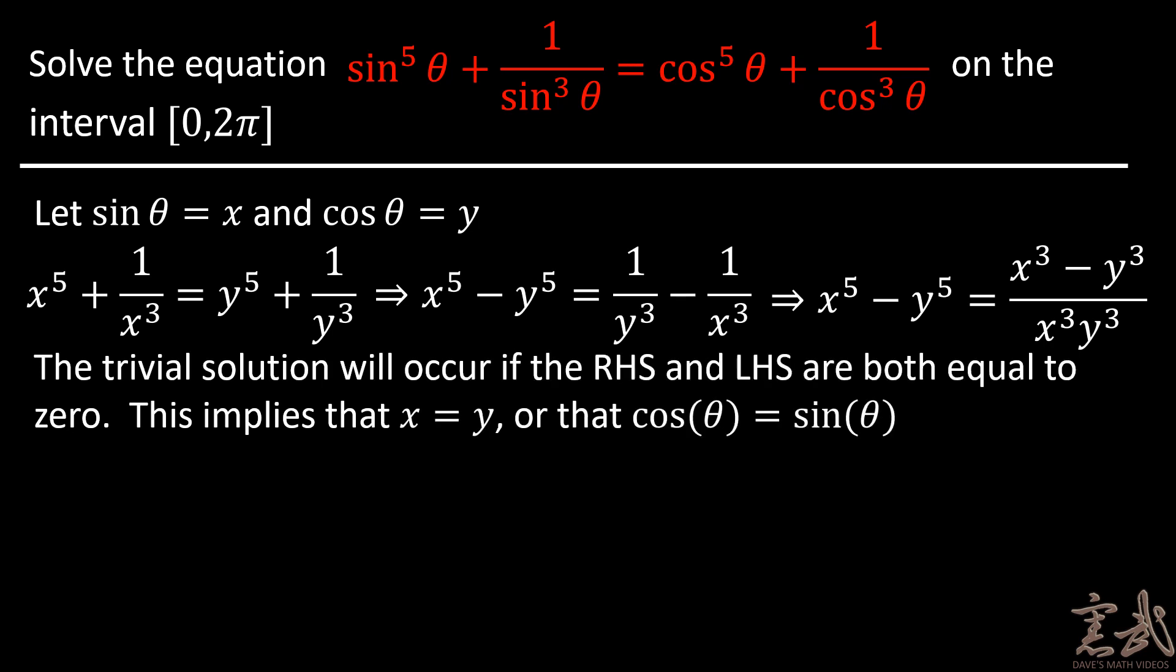The trivial solution will occur if the right-hand side and the left-hand side are both equal to zero. This implies that x is equal to y or that cosine of theta is equal to sine of theta. This of course occurs at pi over 4 and 5 pi over 4.